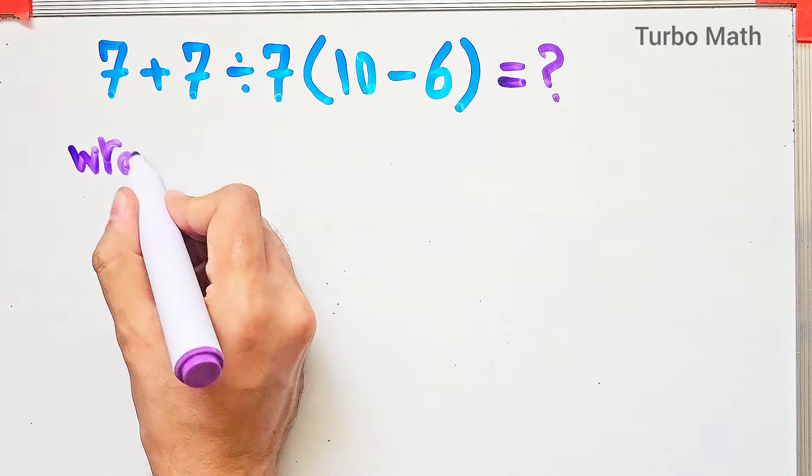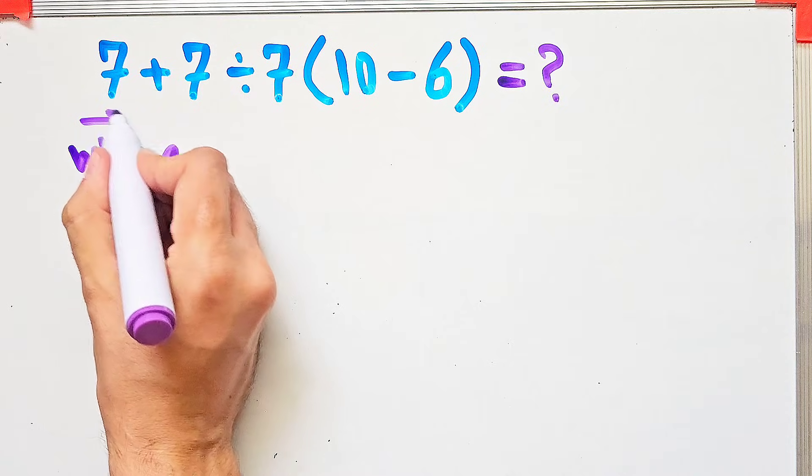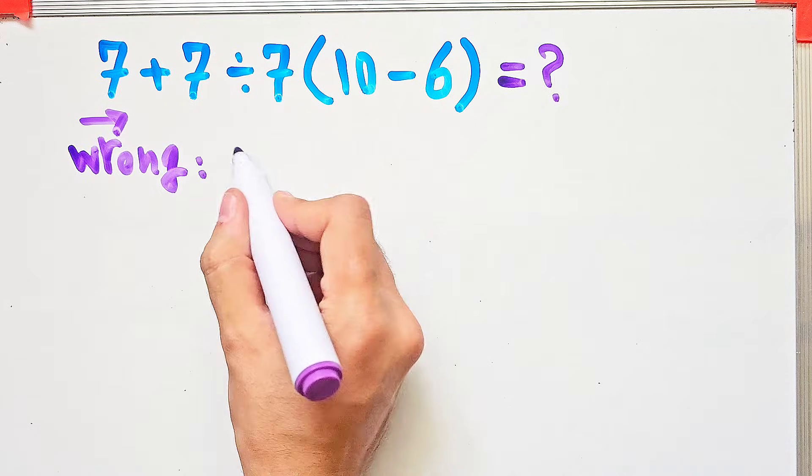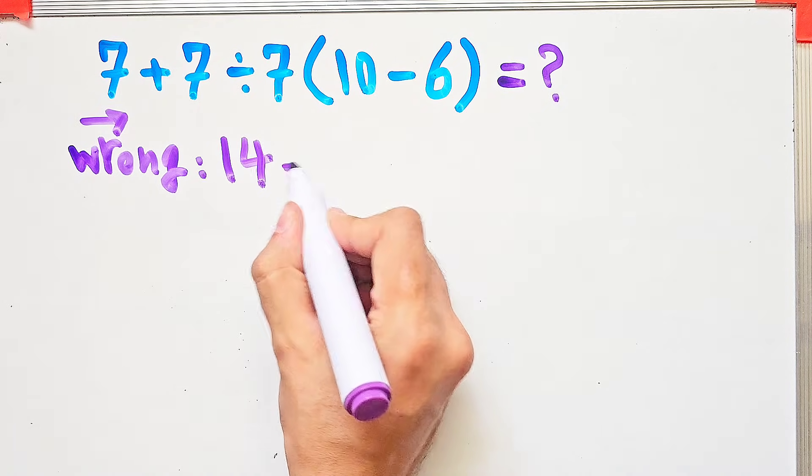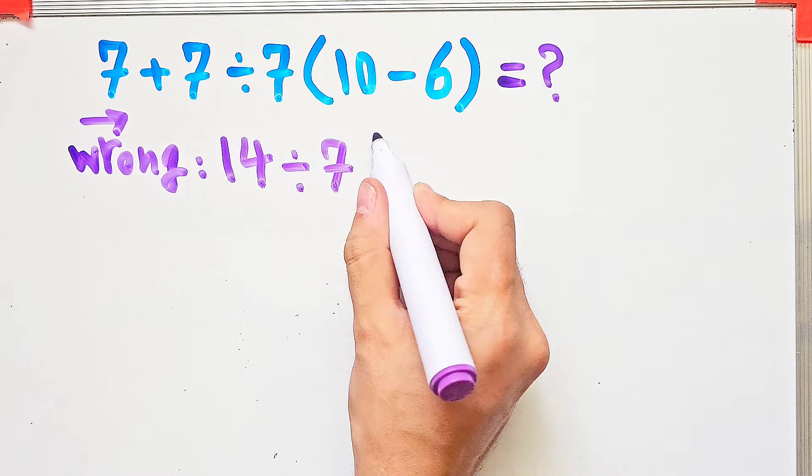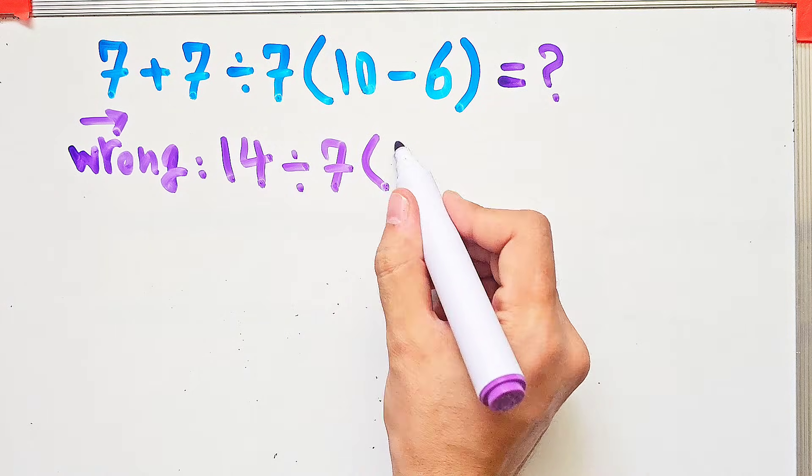Hi friends and welcome to TurboMath channel. In the wrong way of solving this question, some people start from the left and simplify 14 divided by 7 then times 10 minus 6 that equals 4.